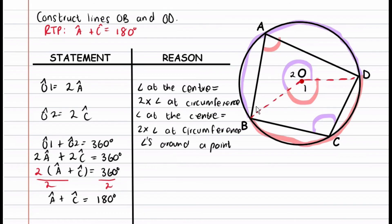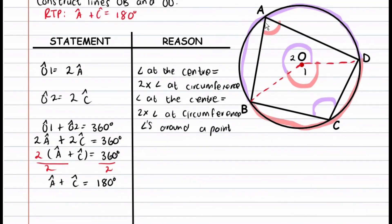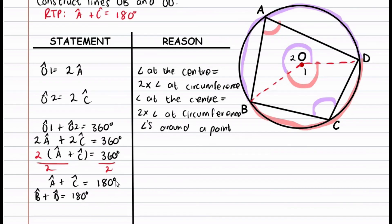If you additionally need to prove that angle B plus angle D also adds up to 180 degrees, you can do it like this. Remember that a cyclic quadrilateral is still a quadrilateral, and the interior angles of a quadrilateral must add up to 360 degrees. So if angle A plus angle C equals 180 degrees, then angle B plus angle D must also equal 180 degrees, so that all four angles sum to 360 degrees. Our reason for this is the sum of interior angles in a quadrilateral.